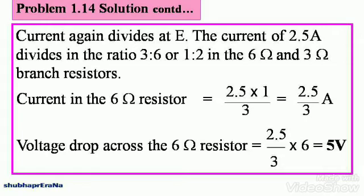Current again divides at E. The current of 2.5 amperes divides in the ratio 3:6 or 1:2. Why is it like that? Because there are 6 ohm and 3 ohm as the branch resistors. Current in the 6 ohm resistor equals 2.5×1 divided by 3, which gives you 2.5/3 amperes.